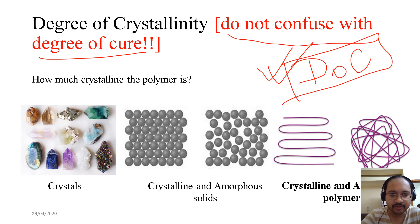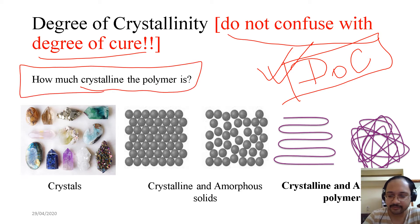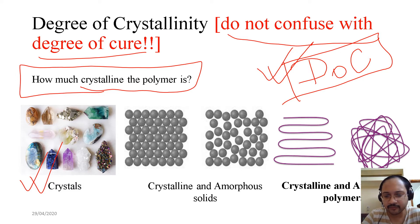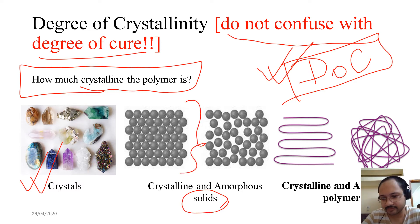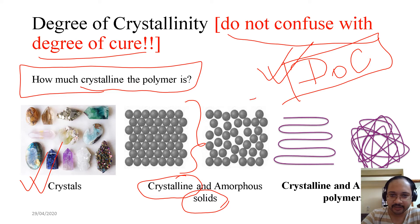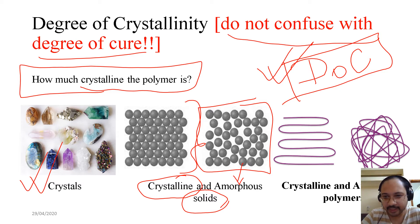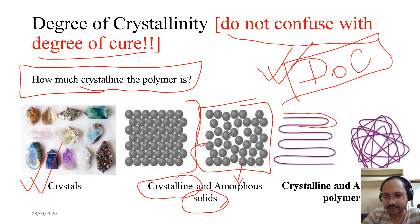Degree of crystallinity refers to how crystalline the polymer is. In solids, crystalline means an ordered arrangement of atoms; if atoms are randomly arranged, it is amorphous. In the case of polymers, a crystalline polymer means an ordered arrangement of polymeric chains, while randomly arranged polymer chains constitute an amorphous polymer.